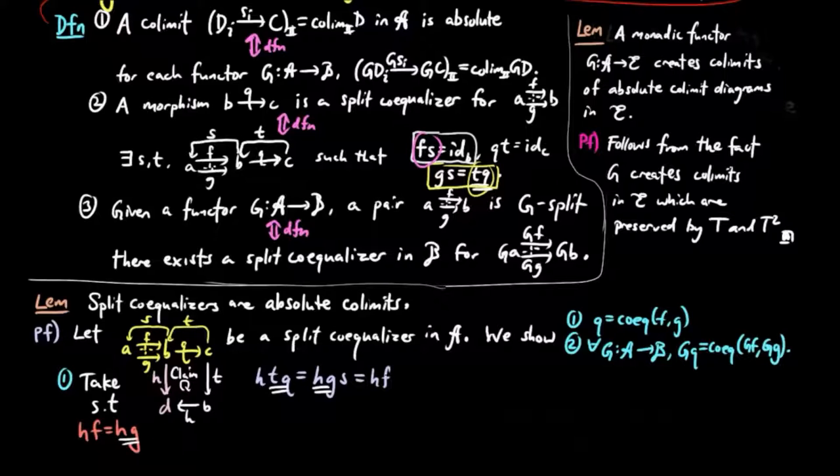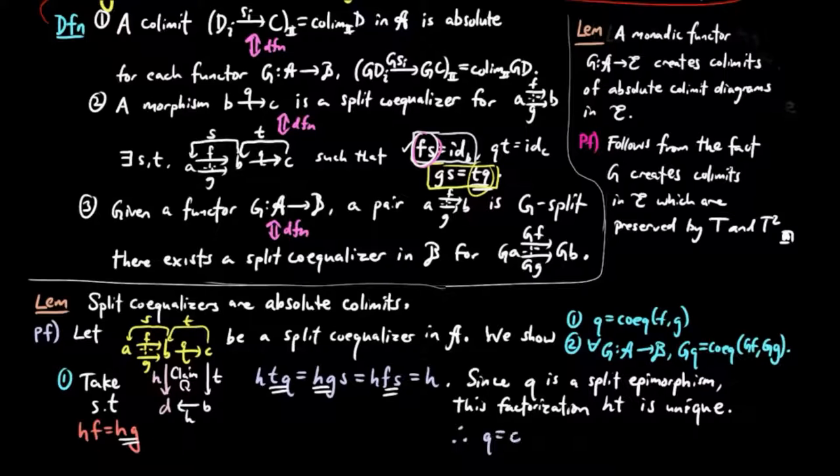And FS is the identity by one of the splitting conditions in the above definition of the split co-equalizer. And so we've shown that HT is a factorization through Q, and then since Q is a split epimorphism, this factorization HT is necessarily unique. Therefore, Q is equal to the co-equalizer of FG, which proves one.